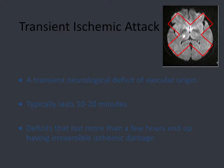A TIA is a transient ischemic attack, though some patients will call them mini strokes. On the diffusion-weighted MRI shown, ischemia appears as bright white. TIAs typically last 10 to 20 minutes and by definition leave no mark on MRI — so the patient shown actually had a stroke, not a TIA. Neurologic events lasting longer than 20 minutes usually show up on MRI given its sensitivity. A TIA is a major warning sign for stroke, and the risk of stroke in the days following is incredibly high, so they must be managed the same way.